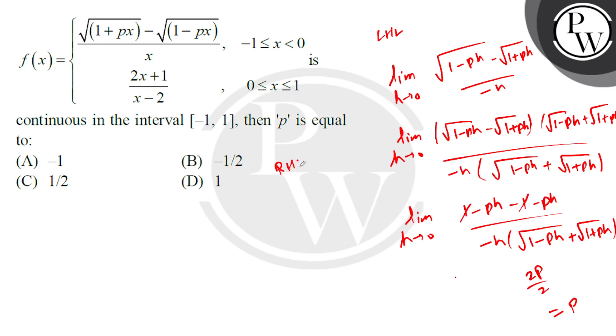that is limit h tends to 0: (2(0+h)+1)/(0+h-2)